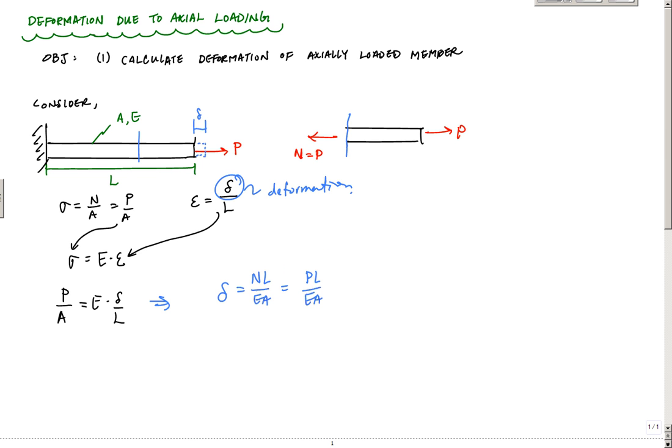This only works for, this has some assumptions in it. One, a constant cross-section, constant cross-section, i.e. the area is constant. The axial, for the internal axial, or internal normal force, internal normal force is also constant. And I have the same material all throughout, same material, it's homogeneous. All right, so this equation assumes constant cross-section and constant internal normal force. So this is a basic equation.